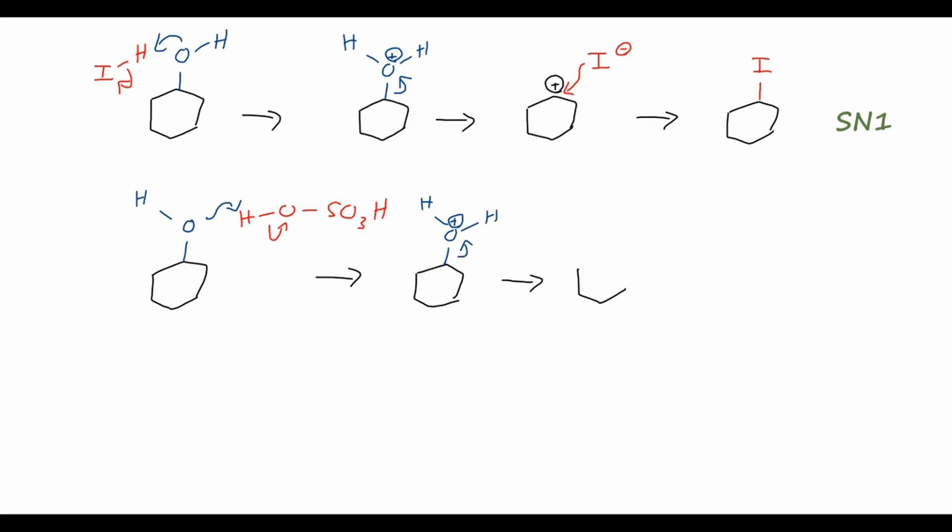However, whereas the I- ion is a good nucleophile, the bisulfate anion, so what we're left with after sulfuric acid loses one of its protons, that is actually a very weak nucleophile. So it won't be able to attack that carbocation to any appreciable extent. So are there any other nucleophiles in the reaction that we can think of?